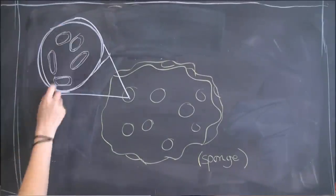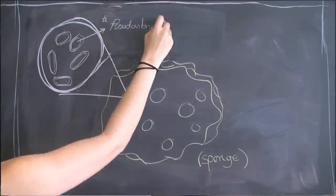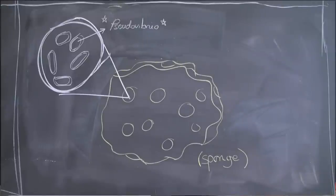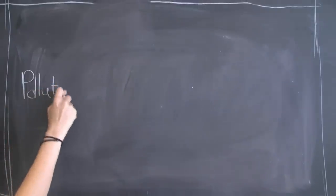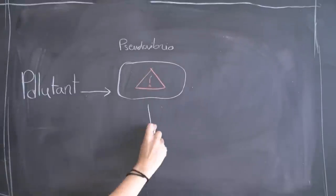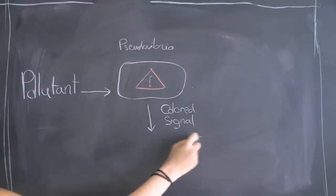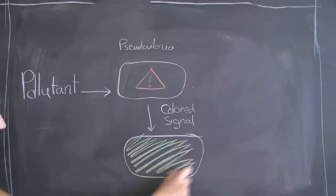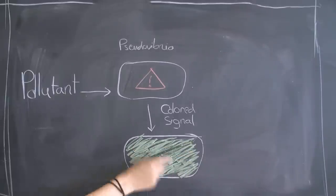We focus on one of those bacteria called Pseudovibrio, which is a major species of the bacteria flora of the sponge. We are engineering it so that it can sense phenol, PCB, nitrates, lead, and cadmium, and then produce a colored signal specific to each pollutant.